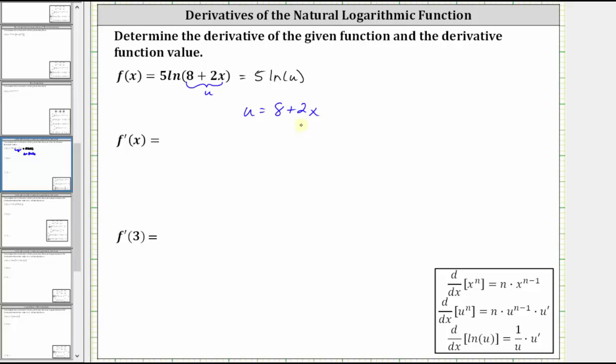We do need to find u prime though, or the derivative of eight plus two x in order to find the derivative. The derivative of eight is equal to zero, the derivative of two x is equal to two, and therefore u prime is equal to two.